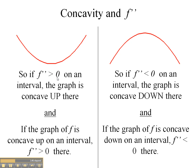If the second derivative is greater than zero on an interval, the graph is concave up there. Conversely, if the graph of f is concave up on an interval, the second derivative will be positive. We could also say that if the second derivative is negative on an interval, the graph will be concave down on that interval, or open downwards. If the graph is concave down, then we can also say the second derivative is less than zero.